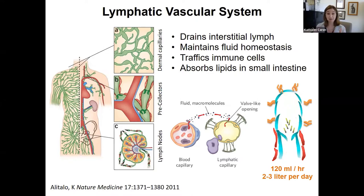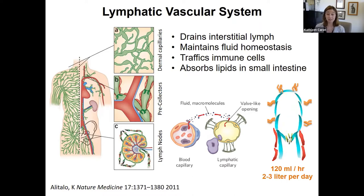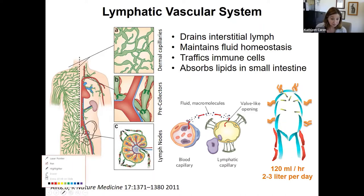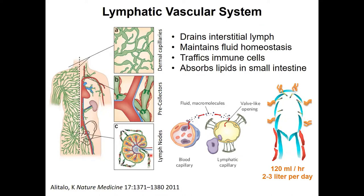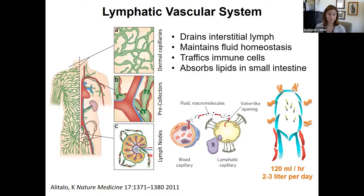The lymphatic vascular system is a parallel and separate vascular system from the blood arteries and veins, although they parallel each other within the body. They have the principal function of draining interstitial fluid, and in doing so, they maintain fluid homeostasis in our organs and in the periphery. They are connected to lymph nodes and play a critical role in trafficking of immune cells, dissemination of metastatic cancer cells, and within the intestine, they are the major route of absorption for lipids.